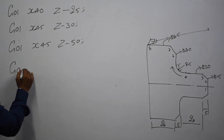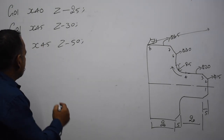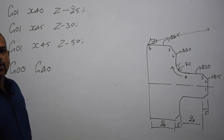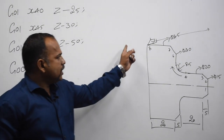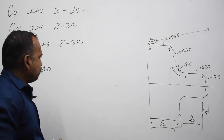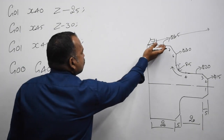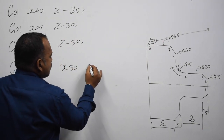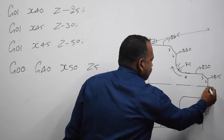Then G00, X40, Z-50. G40 — tool nose radius compensation cancel. G40 cancel. X is 50, diameter 50, Z5. Z5 is the total job retract.